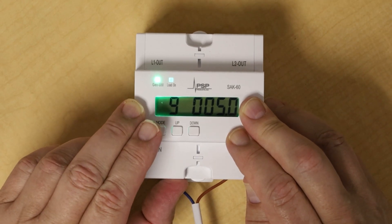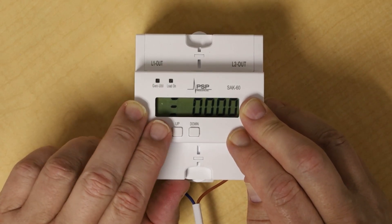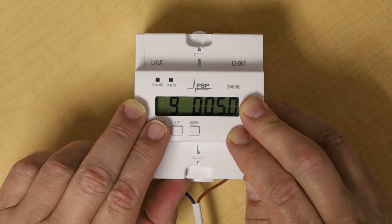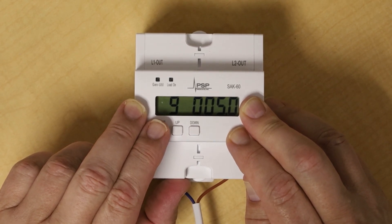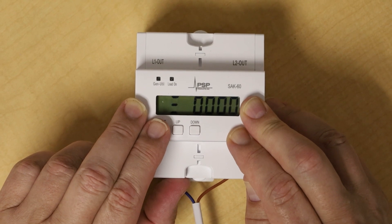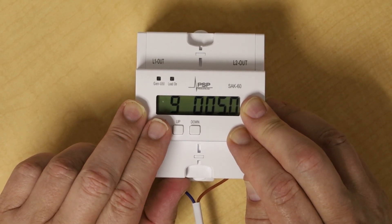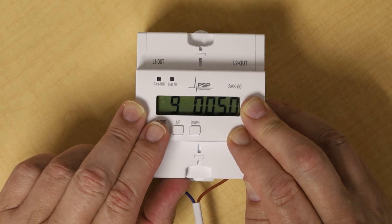This will be set to 5 minutes by default. You can leave it there for the first SAK60 on a system, but for additional SAK60s on the same system, you should stagger that by 0.5 or 30 seconds to stagger the on time of your various loads.